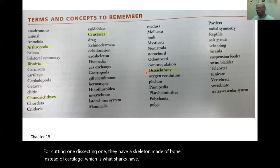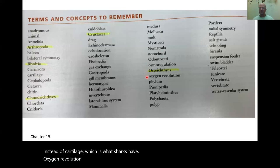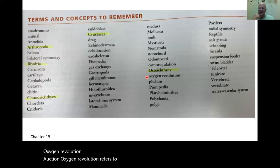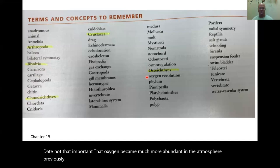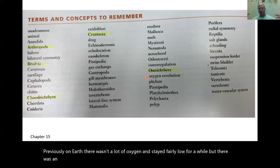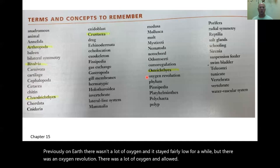Oxygen revolution refers to a period in the past when oxygen became much more abundant in the atmosphere. Previously on Earth there wasn't a lot of oxygen, but after the oxygen revolution, the increased oxygen allowed different organisms to thrive.